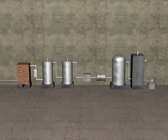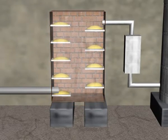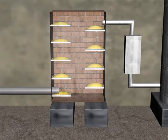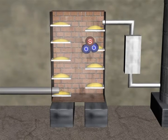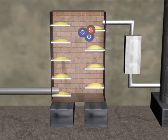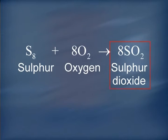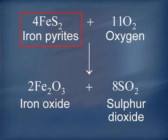Let us first begin with the production of sulfur dioxide by burning sulfur or roasting iron pyrites in sulfur burners. Air containing oxygen passes through the bottom of the tower, and sulfur of yellow color is placed on the shelves. In sulfur burners, sulfur dioxide is prepared by burning sulfur in air, or by roasting iron pyrites in air. In either case, an excess of air is used so that the sulfur dioxide produced is already mixed with oxygen for the next stage.